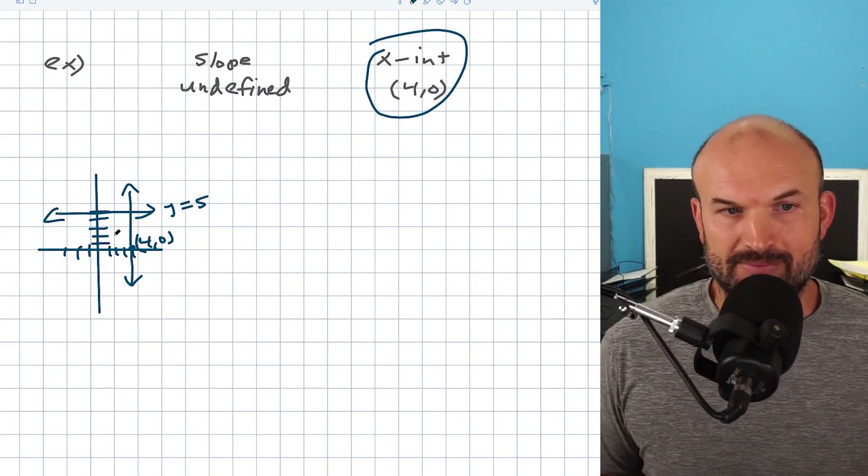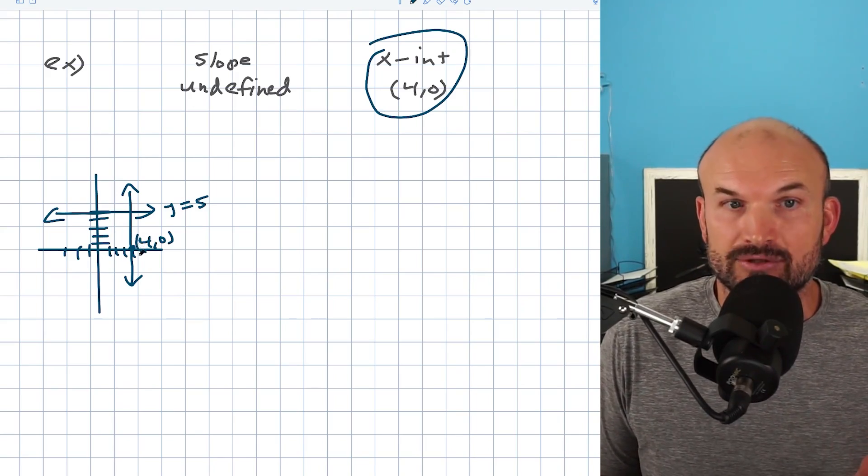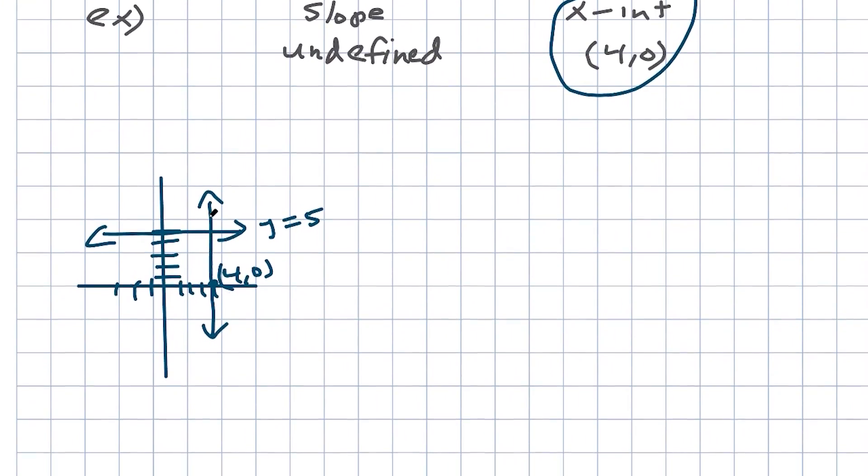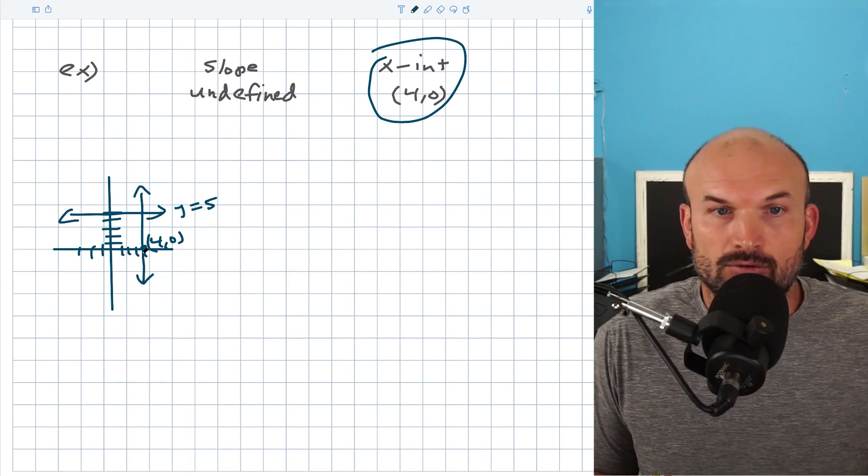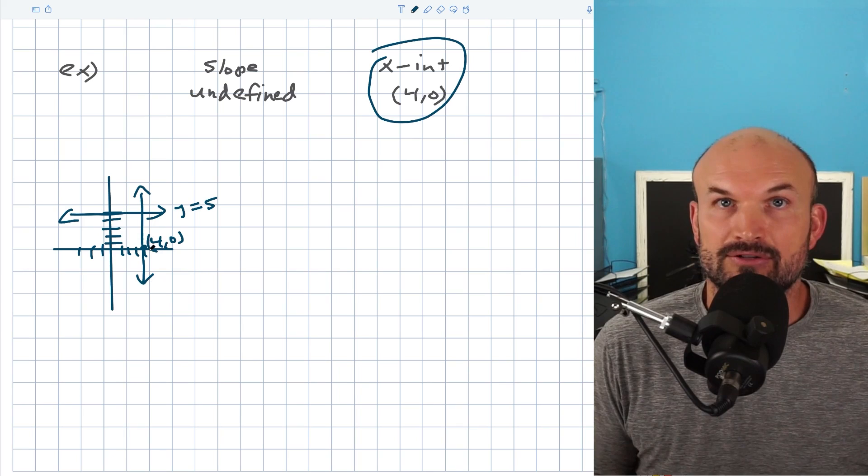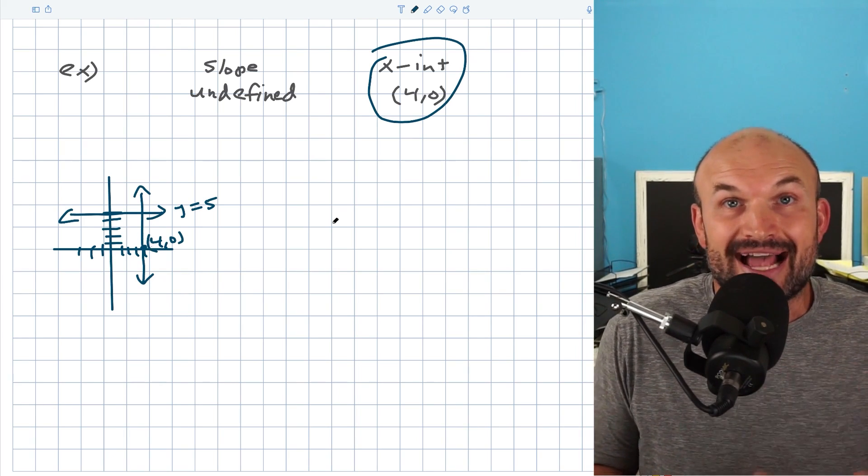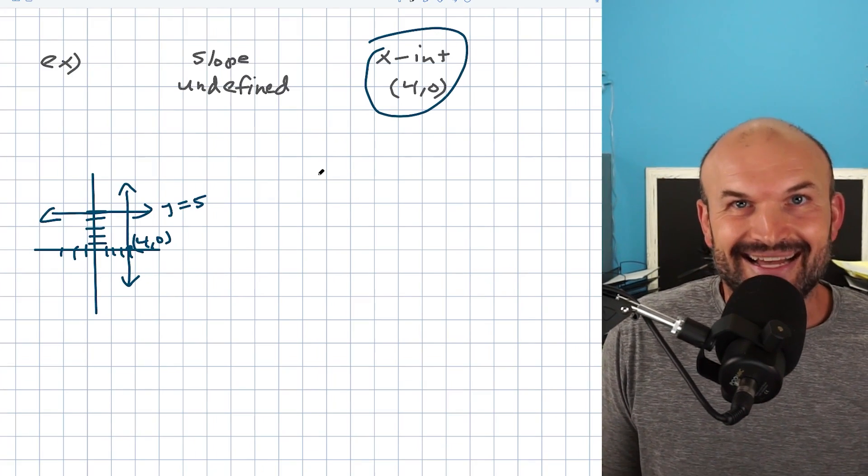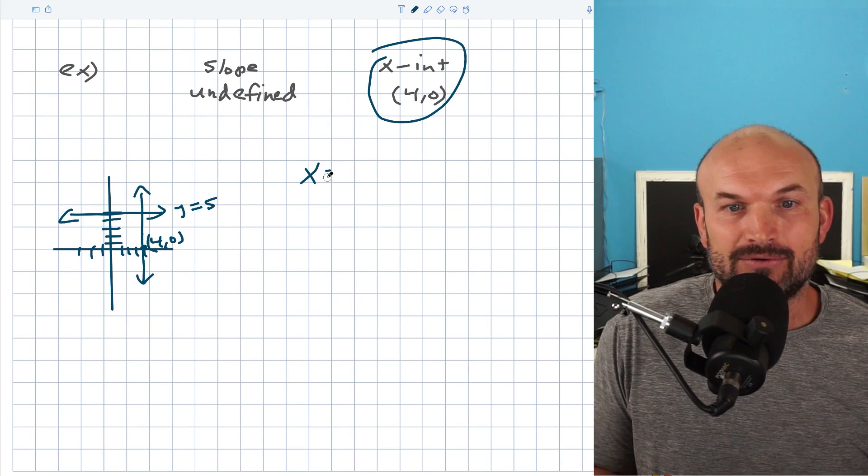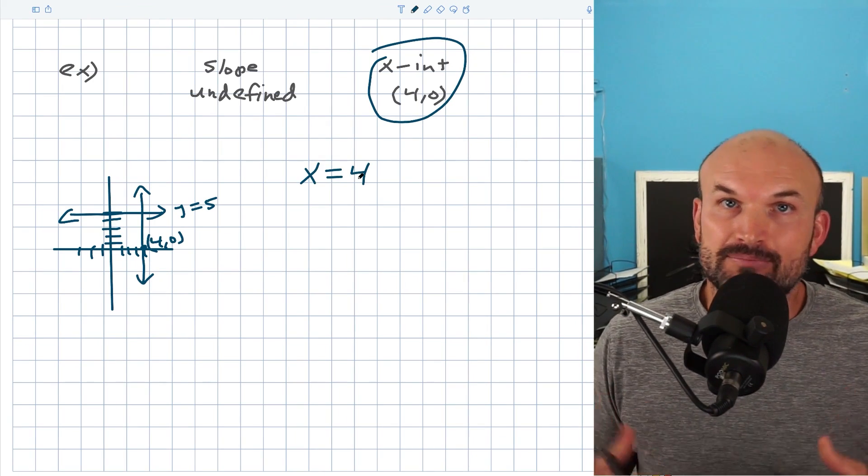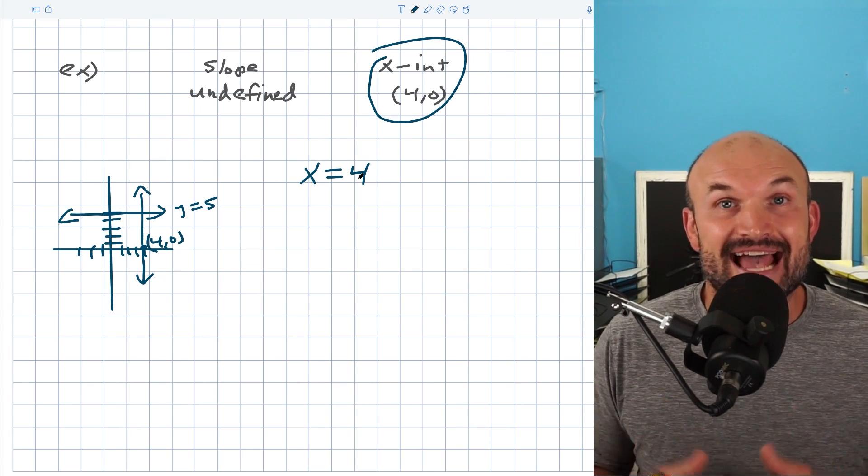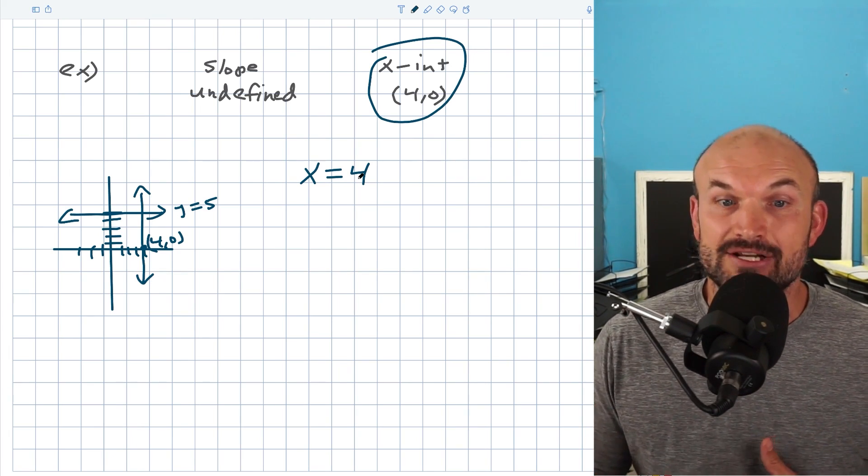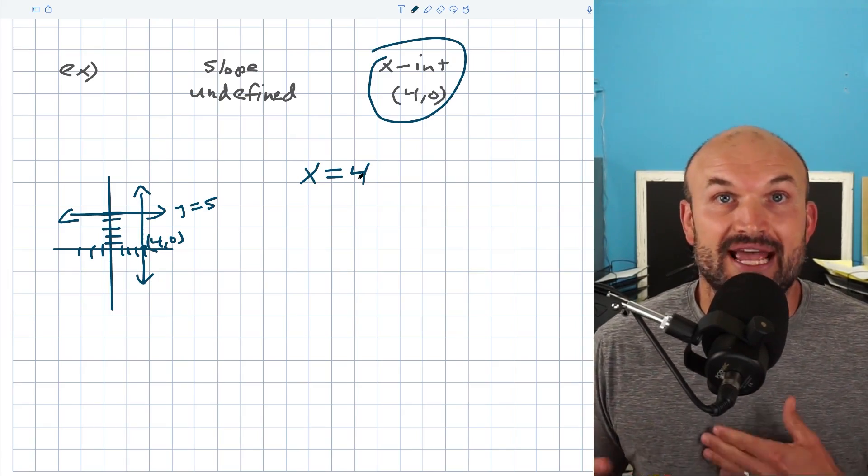So then what do you think a good equation would be if my x value was always equal to 4, right? Do you see as I go up and down this line, my x value for any point on that line is always going to equal 4? So what's a great way for us to be able to represent a vertical line where x is always going to equal 4? And again, you see, I just said it, x equals 4. So whenever we have an undefined slope, we're not going to be able to put it into y equals mx plus b form. We can write it though in the form as x equals whatever your x-intercept. And in this case, it's going to be a 4.